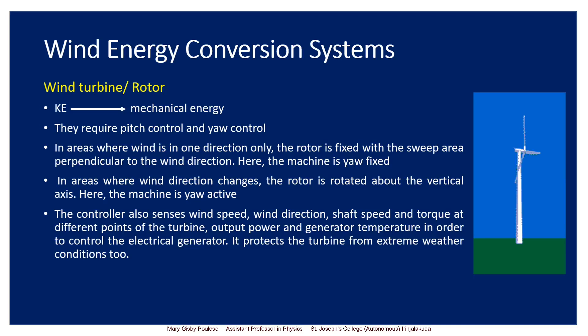In the rotor or wind turbine we also have control mechanisms that check the rotation of the rotor. The controller senses wind speed, wind direction, shaft speed and torque at different points of the turbine, the output power, and the generator temperature, in order to control the electrical generator. All these parameters — wind speed, wind direction, shaft speed, and torque — are continuously changing. The power generated in the generator will differ at different times and the generator might overheat. So a controller is used to sense all these parameters and it also protects the turbine from extreme weather conditions.